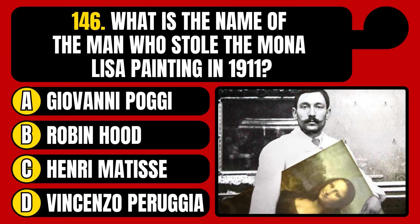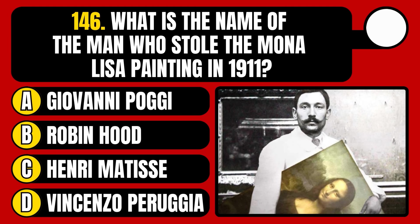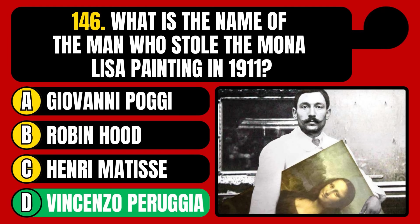What is the name of the man who stole the Mona Lisa painting in 1911? Giovanni Paggi, Robin Hood, Henri Matisse, or Vincenzo Perugia? The correct answer is option D, Vincenzo Perugia.